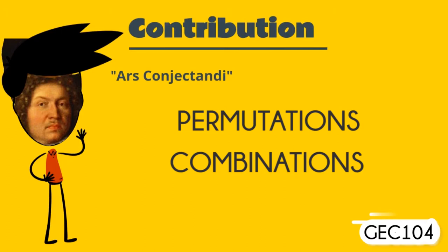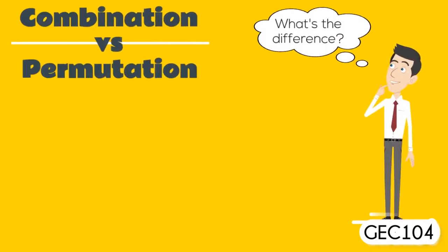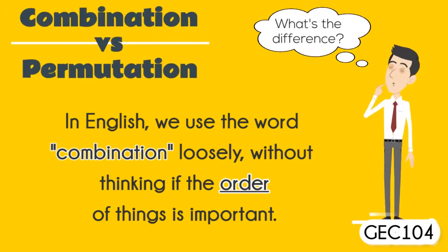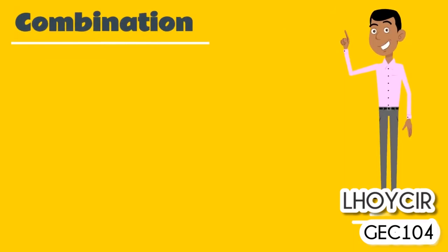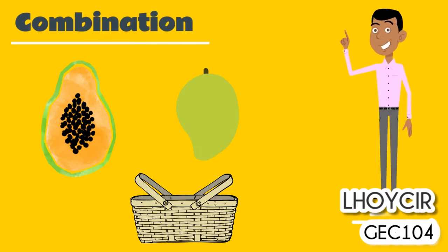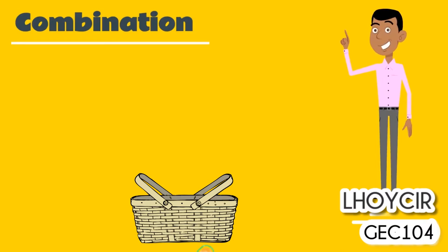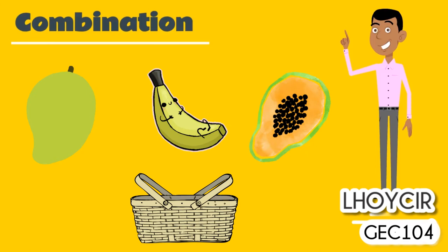So what's the difference? In English, we use the word combination loosely without thinking if the order of things is important. For example, let's say that the fruits in Louise's basket is a combination of papayas, mangoes, and bananas. We don't care what order the fruits are in. They could also be bananas, papayas, and mangoes, or mangoes, bananas, and papayas — it's the same fruit basket.